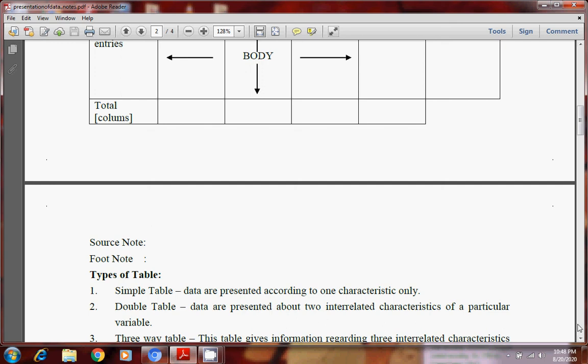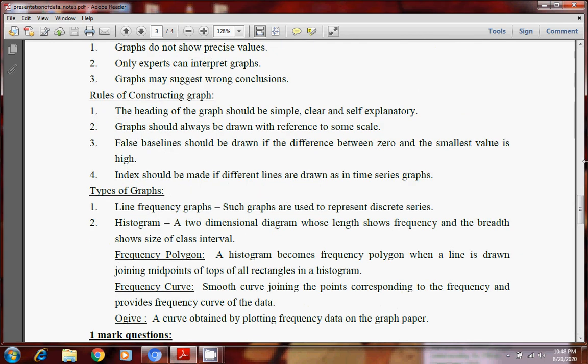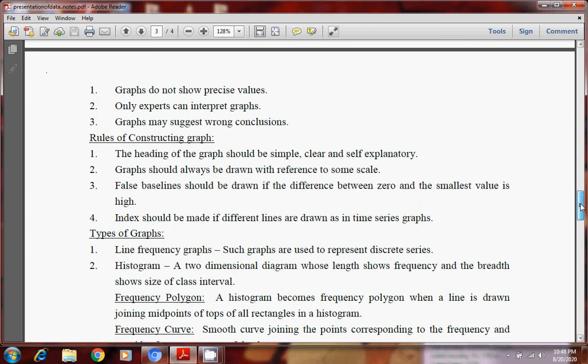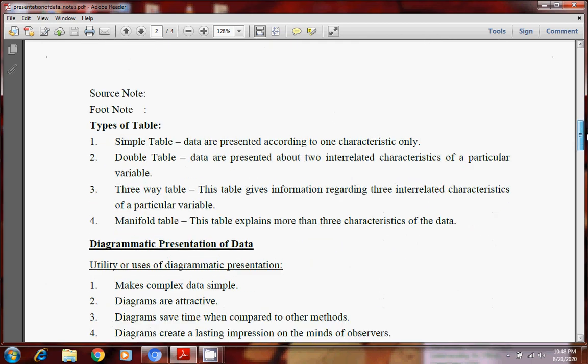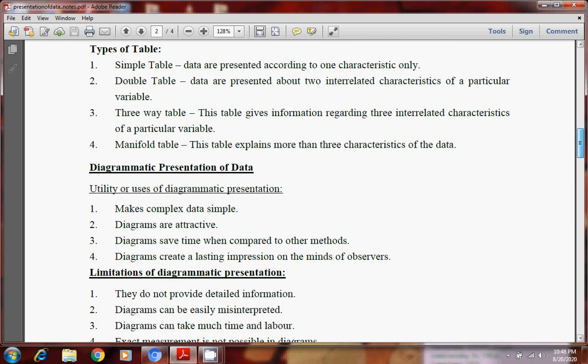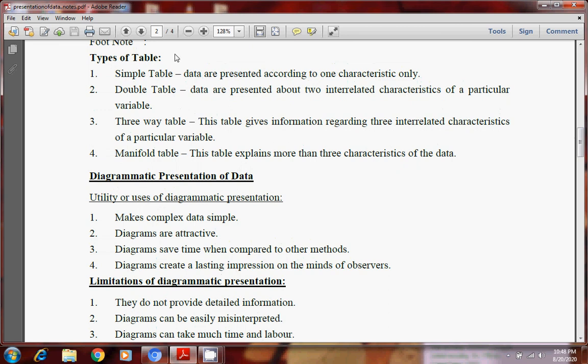Now types of table. How many types of table are there? That we will discuss. Types of table are simple table. Data are presented according to the characteristics only. Then there are double table. Data are presented about two interrelated characteristics of a particular variable. Then three-way table. Then this manifold table.